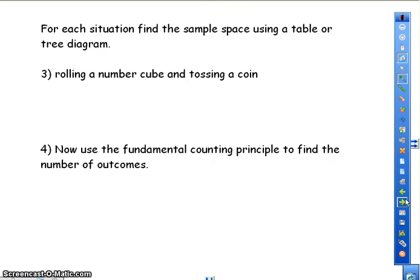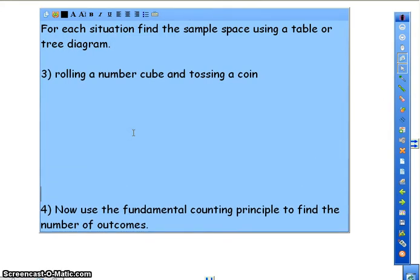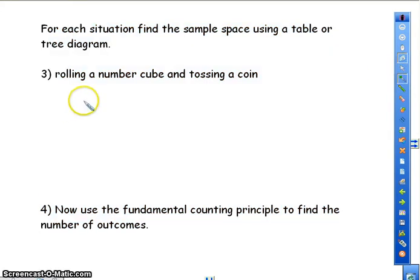For each situation, find the sample space using a table or tree diagram. We're going to do rolling a number cube and tossing a coin. So on a number cube, I have six different numbers. So I'm going to do one, two, three, four, five, and six. This is my number cube.